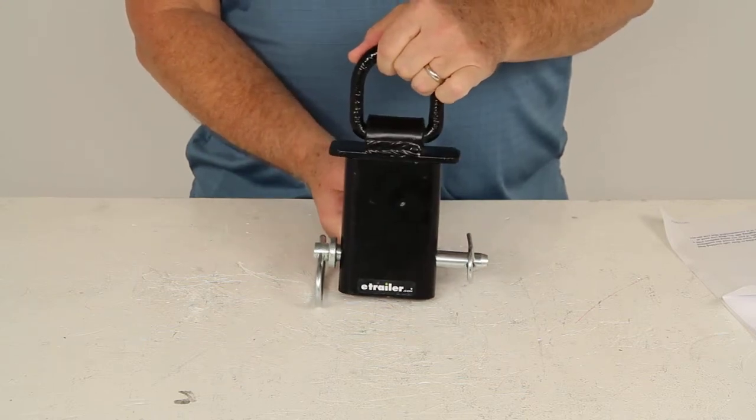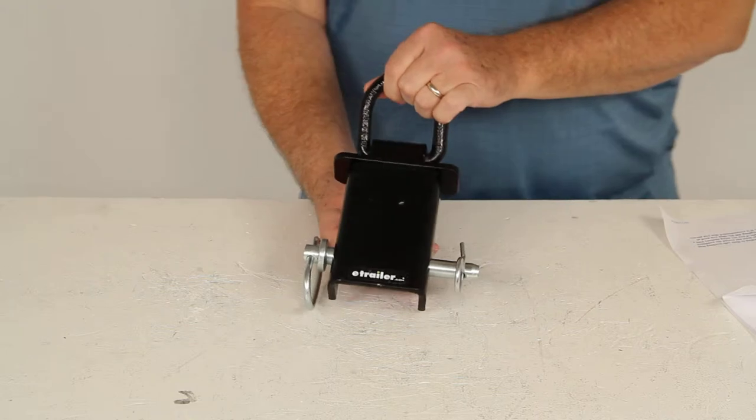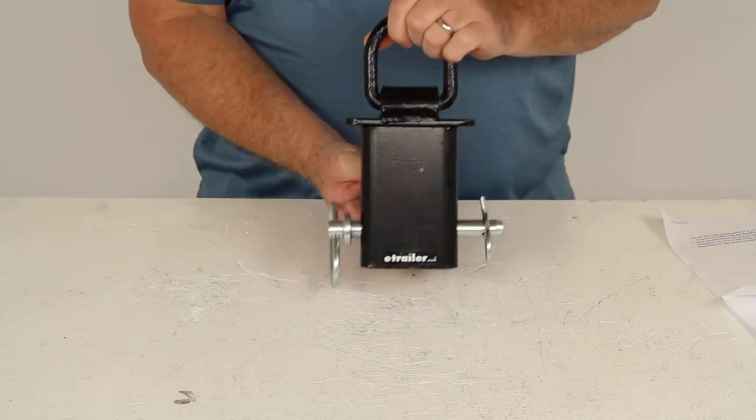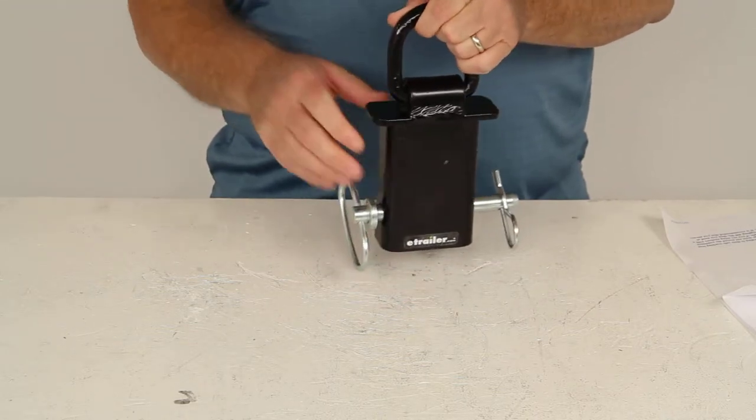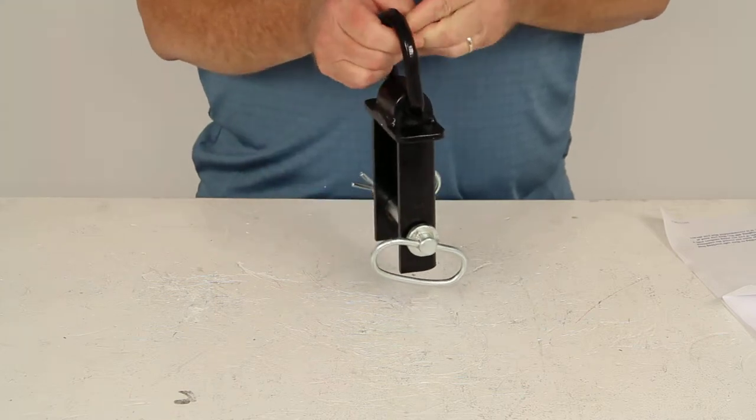It does have a 4,000 pound working load limit. Now this stake pocket tie down will fit into any standard 2 inch by 4 inch stake pocket on a flatbed truck or utility trailer.